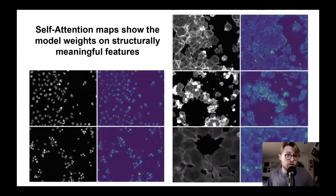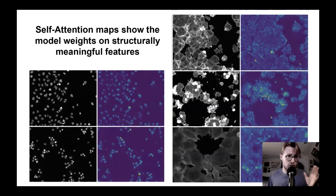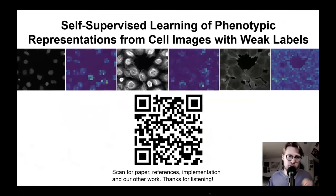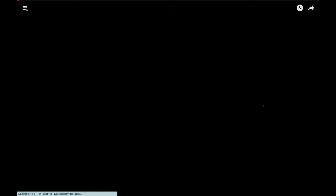We can also show, using attention maps, that we're learning structurally meaningful features. This is a property of the vision transformer backbone of the network. Thanks for listening — here's the great team. If you want to know more about this work, scan the QR code and you'll find everything you need.